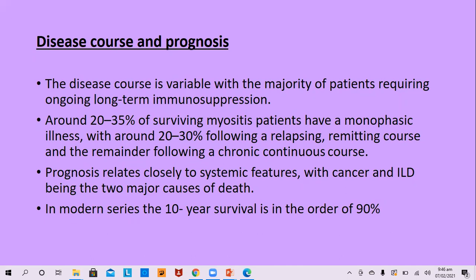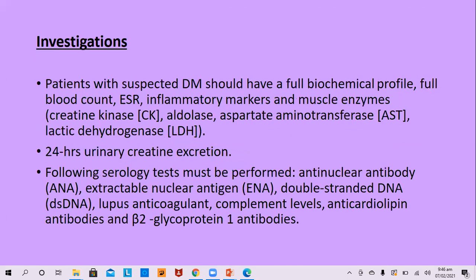Investigations: patients with suspected dermatomyositis should have a full biochemical profile, full blood count, ESR, inflammatory markers, and muscle enzymes — creatinine kinase, aldolase, aspartate aminotransferase, and lactic dehydrogenase. 24-hour urinary creatinine excretion is elevated. Serological tests include antinuclear antibody, extractable nuclear antigens, double-stranded DNA, lupus anticoagulant, complement, anti-cardiolipin antibody, and beta-2 glycoprotein-1 antibody. Approximately 80% of dermatomyositis patients have positive antinuclear antibody, often in low titer.